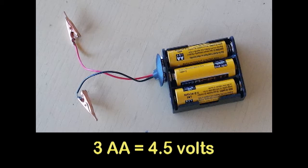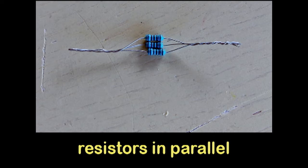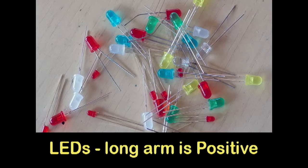We've got three AAAs and that equals 4.5 volts. We'll be adding resistors because we really only need 3.4 volts. I've put three in parallel to get the right amount of resistance for the UV LEDs we're going to be using today.